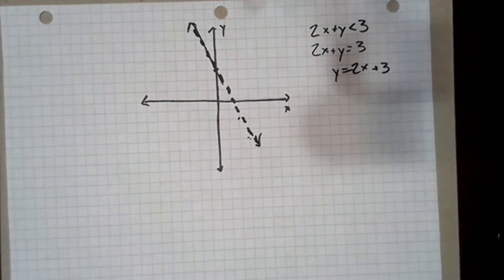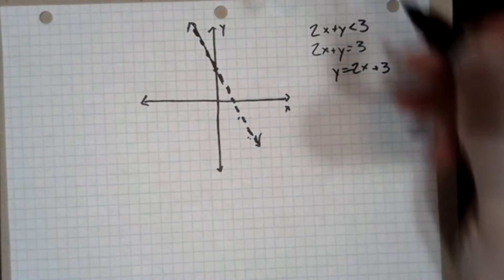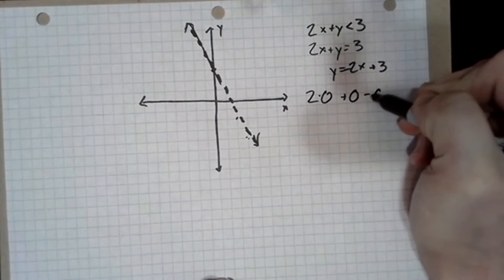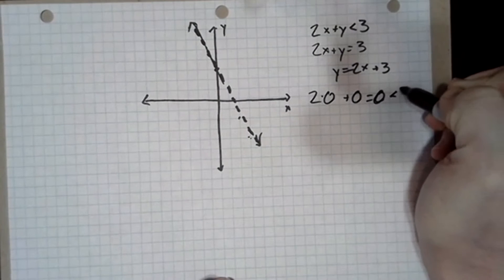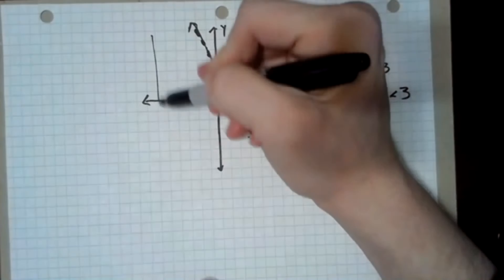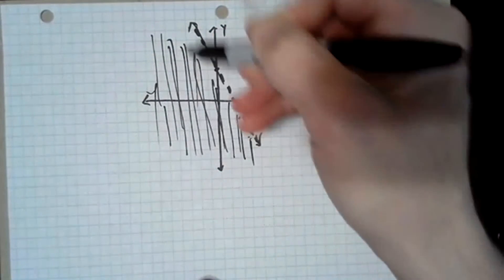All right. So now we want to check points. We want to pick a random point that is not on the line and see whether it solves the equation or not. And a good point to use is zero, zero, the origin. If you can, if the line doesn't go through the origin, that's a really easy point to use. So if we have two times zero plus zero, that's zero. And that's less than three. So that makes this true. Which means that everything below this line is going to be a solution to that inequality.